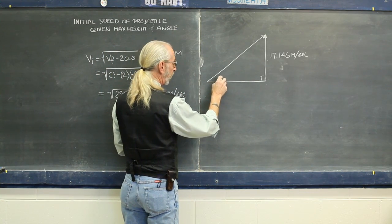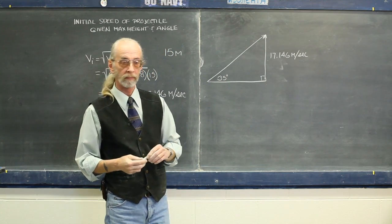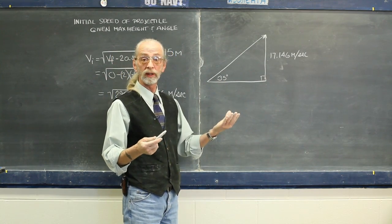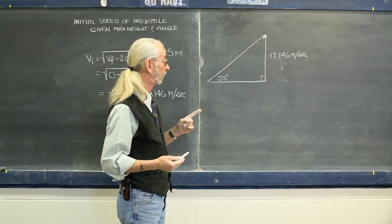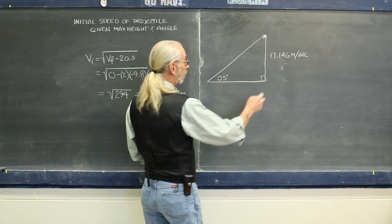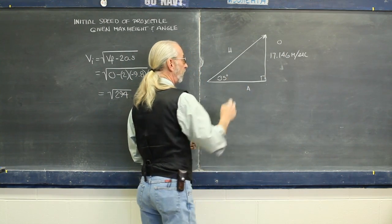Let's say that we know that the angle was 35 degrees. Well, we actually have everything we need to know to find out what the actual trajectory was. We're going to use a little bit of trig. Remember, this is opposite, this is adjacent, this is hypotenuse.